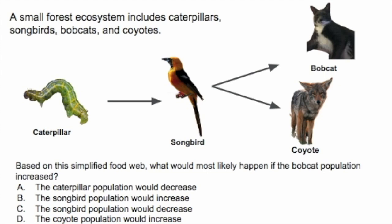A: The caterpillar population would decrease. B: The songbird population would increase. C: The songbird population would decrease. Or D: The coyote population would increase. Pause the video, try to figure this question out, and then when you're ready, we'll go over how to do it.